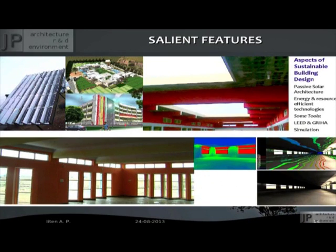To sum up, the salient features of sustainable building design are passive solar architecture and energy and resource-efficient technologies. Tools you can use include LEED and GRIHA — guidelines for achieving sustainable design available free of cost on their websites. You can use simulation to optimize your design, and Professor Nayak will show how.